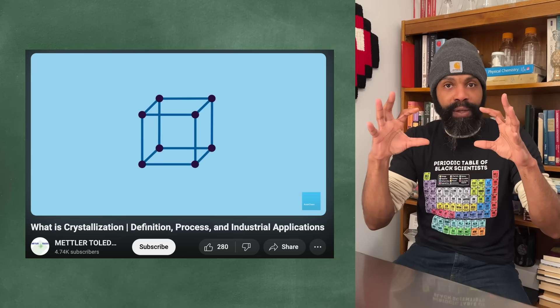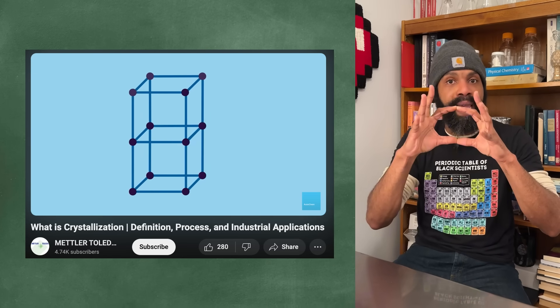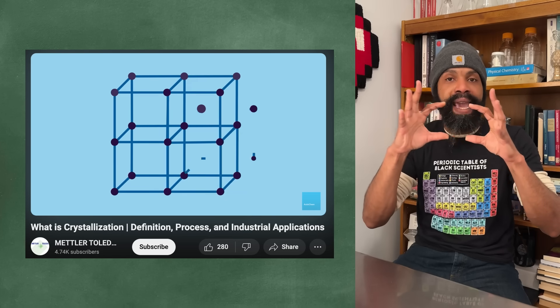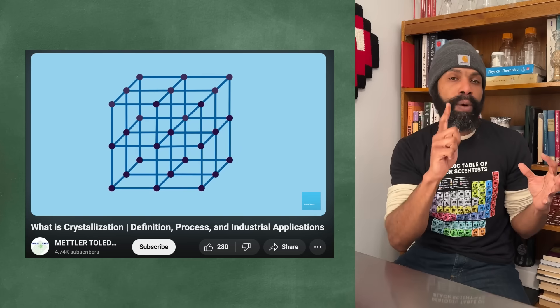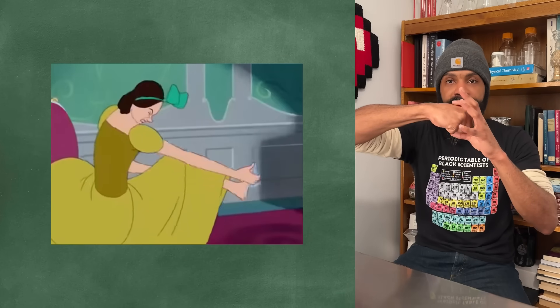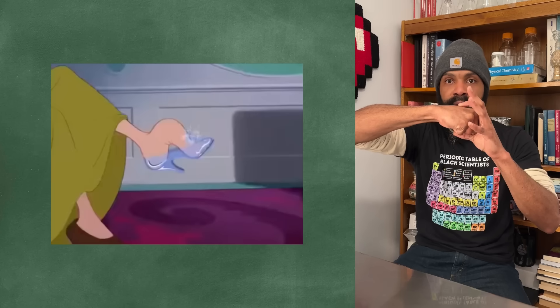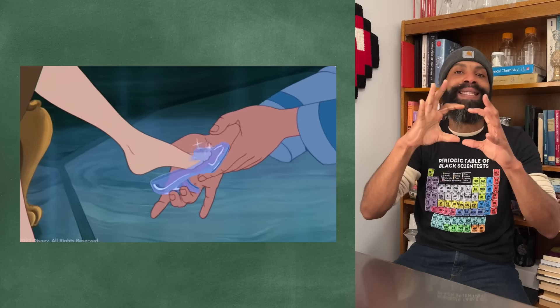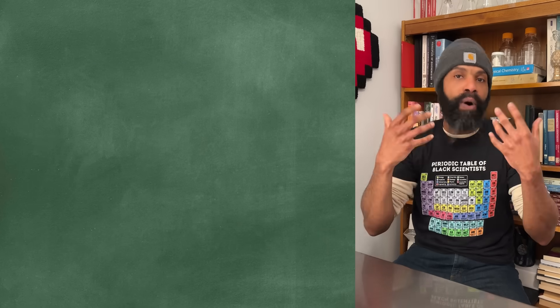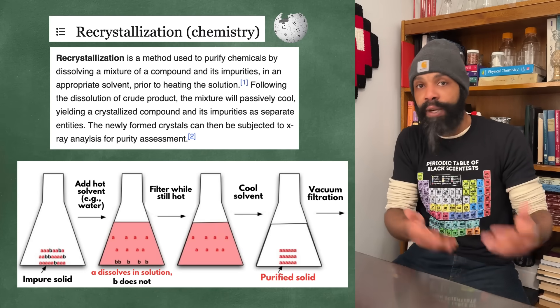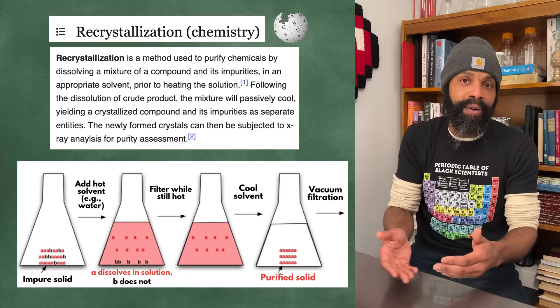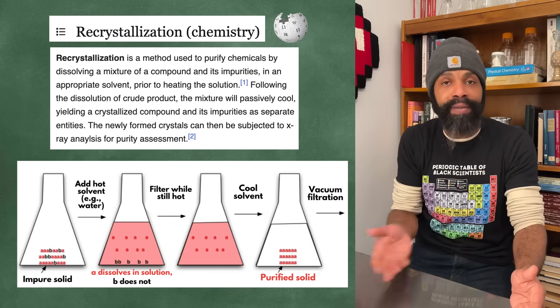Each of those citric acid molecules kind of have to come together and hold hands in the right orientation, and if they can't then they don't form a crystal. But more importantly, if something else tries to get in there and form the crystal, it won't work either. It has to be the citric acid molecule. Recrystallization is itself a process of purifying things, and this is how they get pure citric acid.